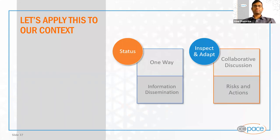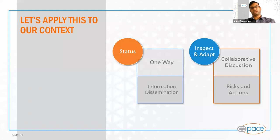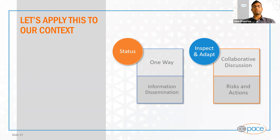Let's apply this to our context. What is status? Status is a one-way conversation where the person providing the status is disseminating information to the rest of the audience — that is the primary goal. There is some back and forth, but the primary goal is still information dissemination from one side to the other. Whereas inspect and adapt is more of a collaborative discussion around what could be the risks to our goal, what action should we take to mitigate or resolve those risks, and successfully accomplish the goal.